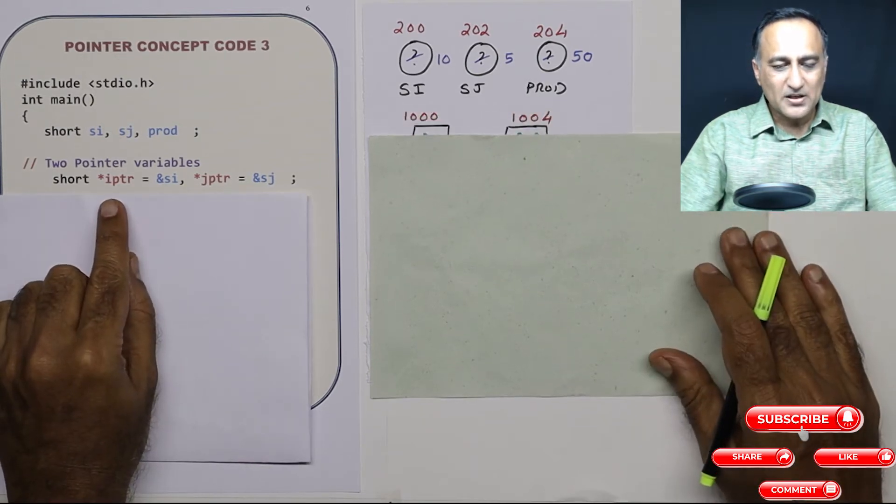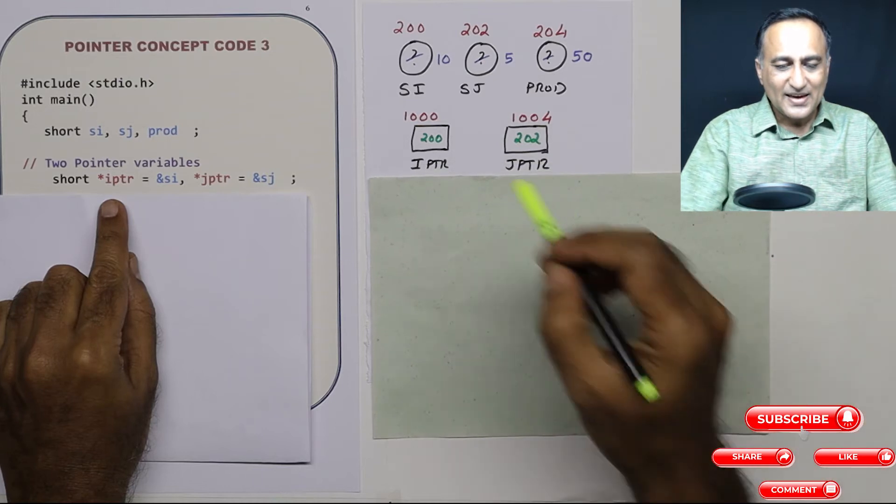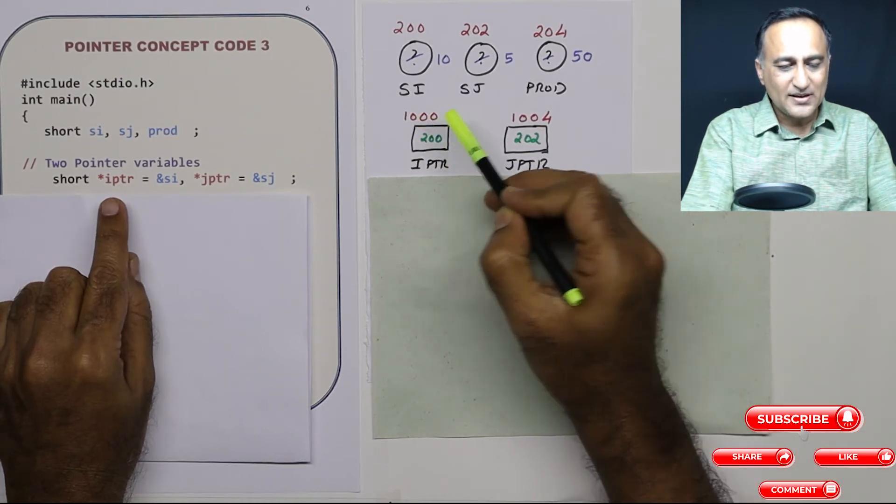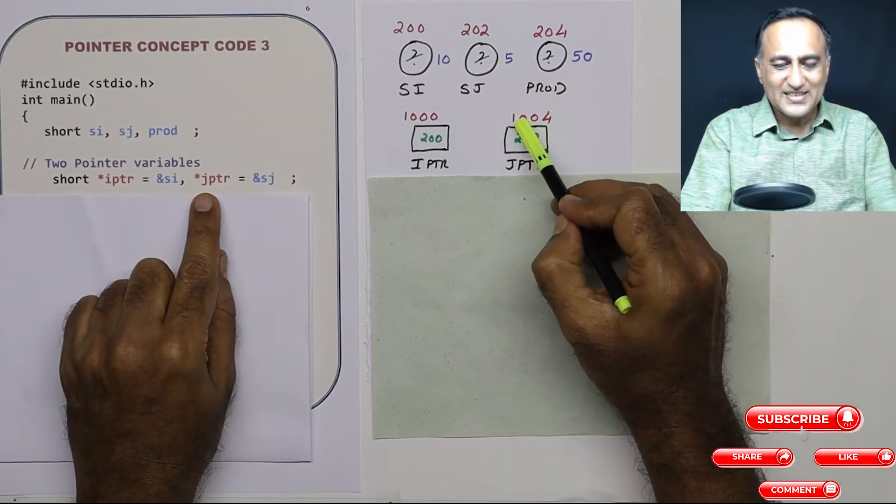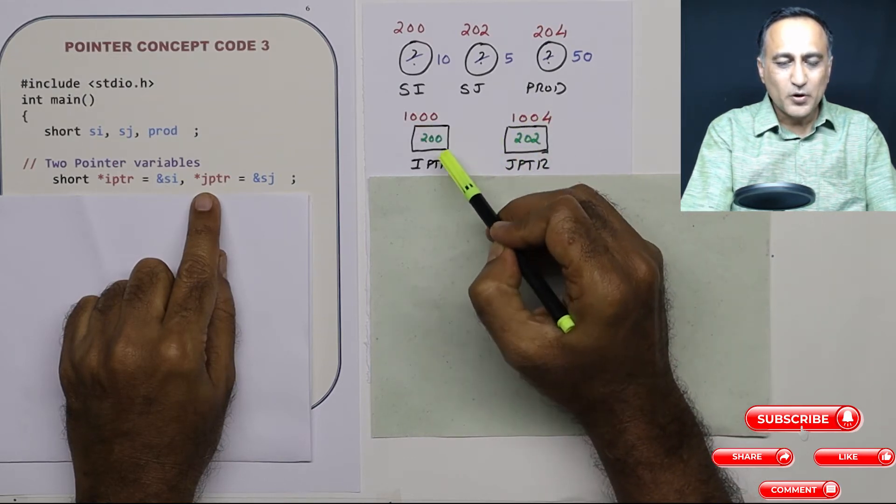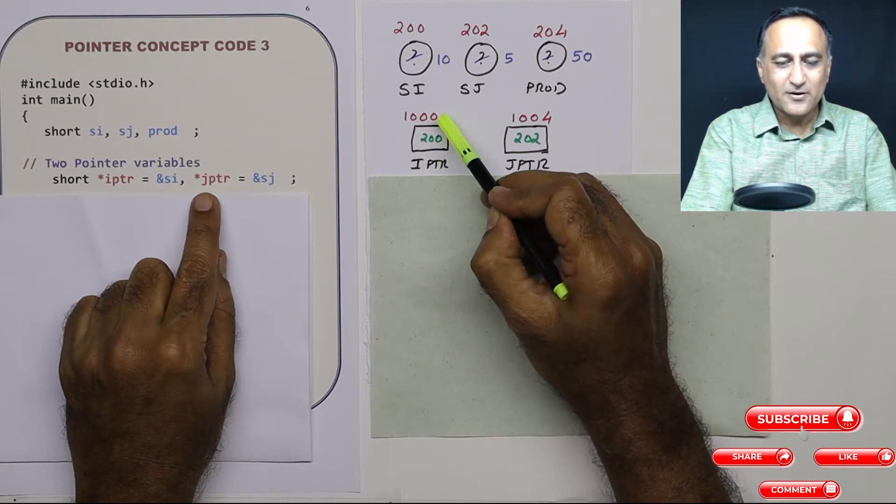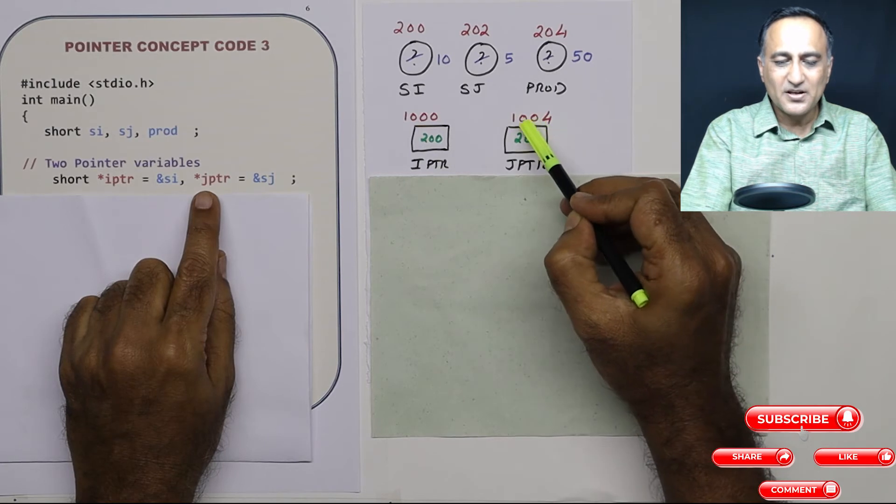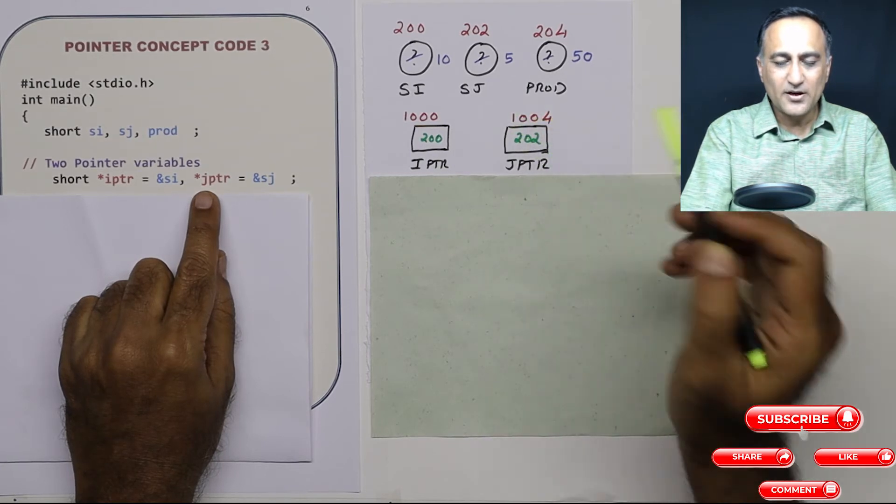So IPTR, let us say, exists at address 1000. JPTR exists at address 1004. I am assuming that pointer data type sizes 4 bytes. So IPTR exists at address 1000, JPTR exists at address 1004.